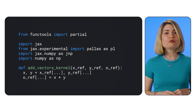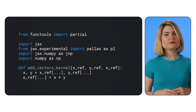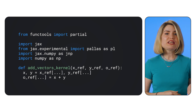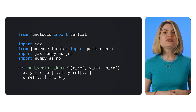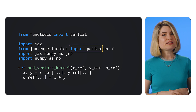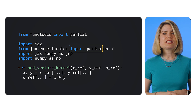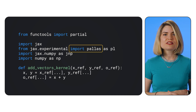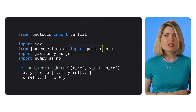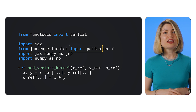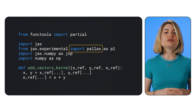Let's start with a classic hello world example: adding two vectors. Normally in JAX you'd use jnp.add, but with Pallas we'll do it a little differently. First we import Pallas and define our kernel function. It takes three arguments, which are references to memory locations. We use xref to read the entire array from the memory location referenced by xref, then we add the arrays and store the results in oref.